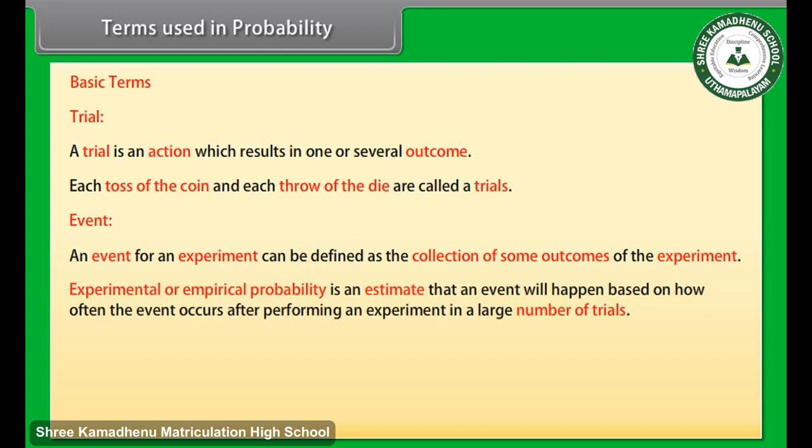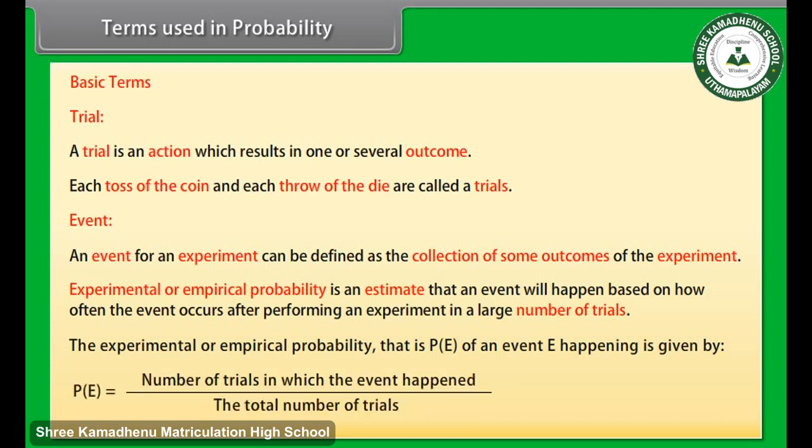Experimental or empirical probability is an estimate that an event will happen based on how often the event occurs after performing an experiment in a large number of trials. The experimental or empirical probability, that is P(E), of an event E happening is given by P(E) equals number of trials in which the event happened upon the total number of trials.